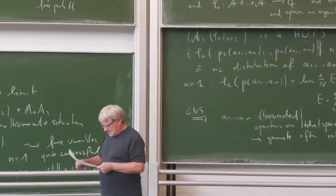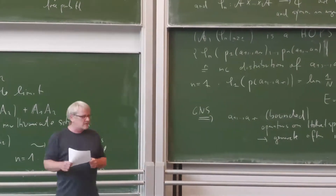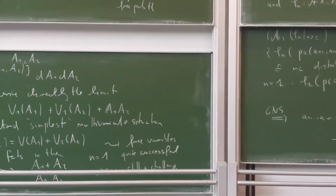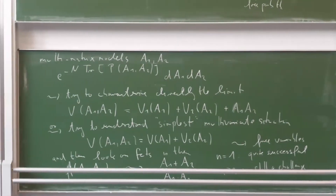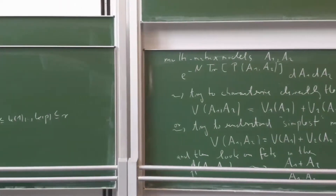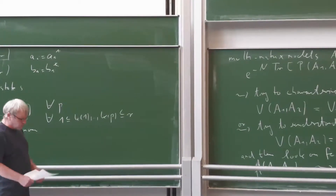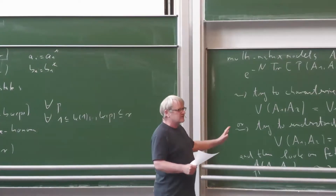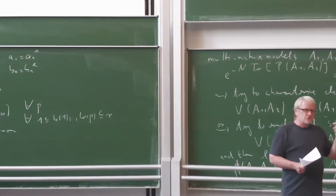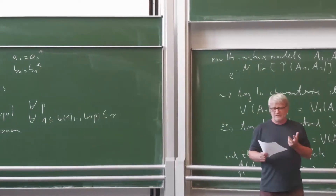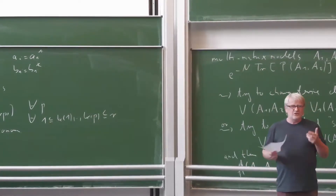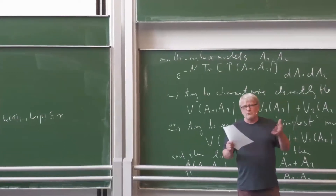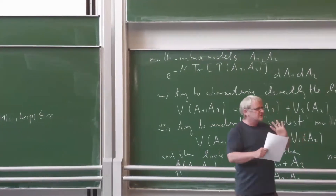For n = 1 there is much more in the background — positivity, operator algebras — and that's important for the big success of free probability theory. For n ≥ 2 those things are somehow not so clear. The definition of higher-order freeness is modeled on what happens with random matrices, but we don't really know a good operator algebraic connection, and in particular it's not clear what kind of positivity we have — φ_1 is a state, but φ_2 is a limit of a covariance and doesn't have a nice positivity structure.